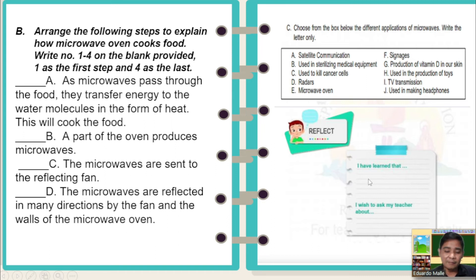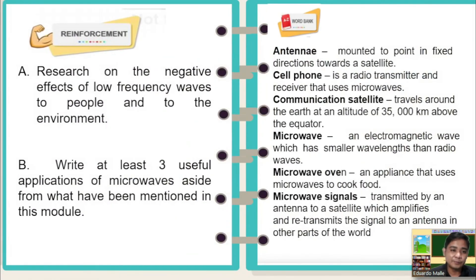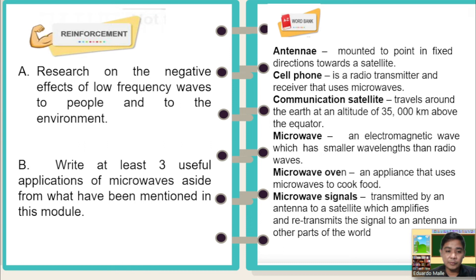To reflect on what you have learned, you may put your comments about your learning and your questions in the comment section or write them in your activity notebook and submit at school. I will read all your comments and answer your questions. For reinforcement: Letter A — research the negative effects of low frequency waves on people and the environment through interviews, library research, or the internet. Letter B — write at least three useful applications of microwaves aside from those mentioned in this module.